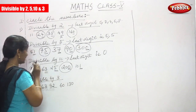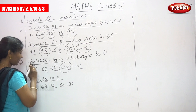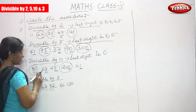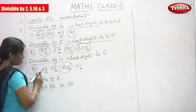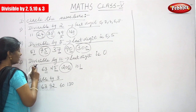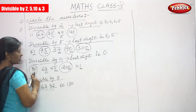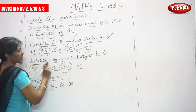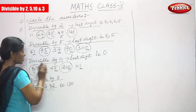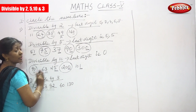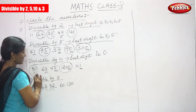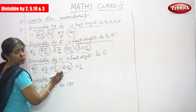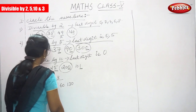Let's tell the answer. That is 90 and 200. These are the numbers divisible by 10. You have to circle only these numbers. The answer is 90 and 200.